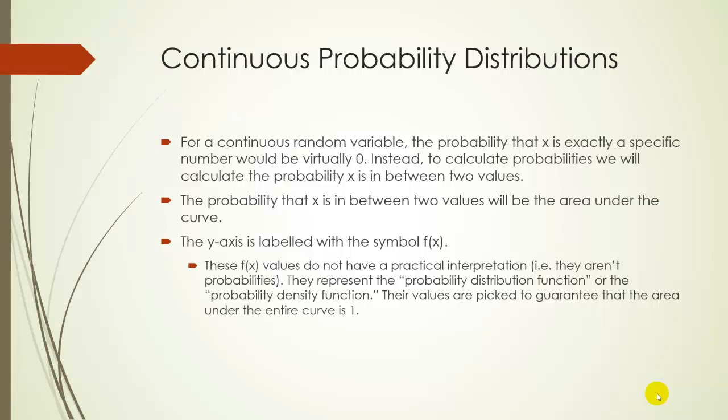In other courses, if you take more stats classes, this is often abbreviated as PDF — probability density function. Their values don't have a really good meaning, but they're picked in a way such that the whole area under the curve, if you were to shade it, would be one. Because the sum of the probabilities of a distribution should be one.